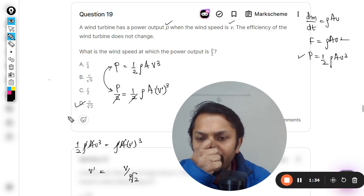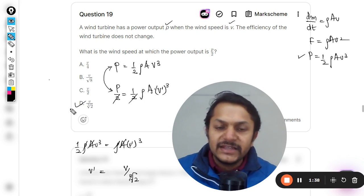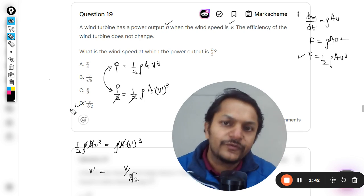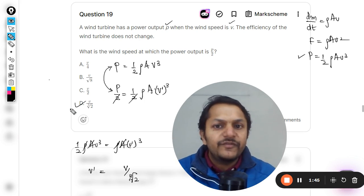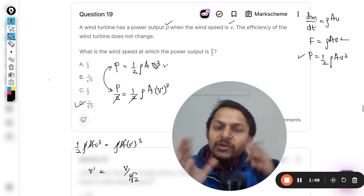So the answer will be D and thereby we can be sure of this thing that yes the answer is going to be D. Well, although there is a shortcut also for this question particularly because we know that if you're talking about velocity, cube is involved, so either there will be a cube or there could be a cube root, something will be there.